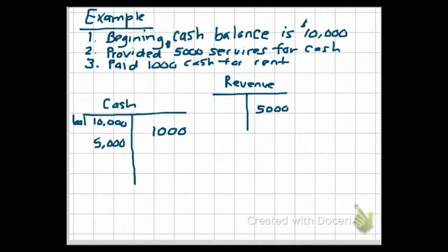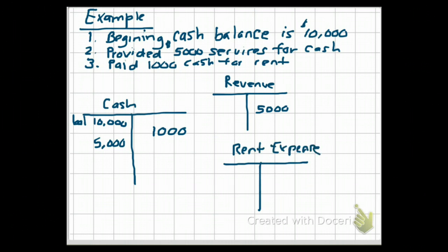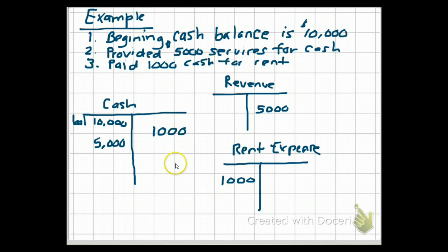That's only one side of the transaction. What did we receive? We received rent — we had rent expense. So we will have a T-account for rent expense. From your mnemonic, expenses are debits, so rent expense has a debit normal balance. Our rent expense increased, therefore we put it on the same side as the normal balance: a debit. As you can see, we had an equal and opposite reaction — a $1,000 debit for rent expense and a $1,000 credit for cash — and we reported both sides of the transaction.